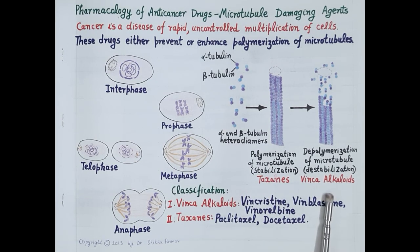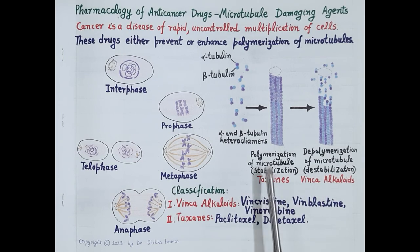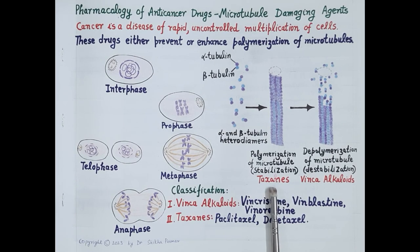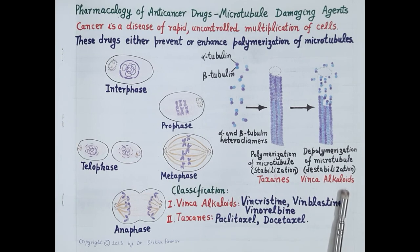Vinca alkaloids depolymerize microtubules, causing shortening of spindle fibers, and thus prevent lengthening. On the other hand, taxanes polymerize microtubules, causing lengthening of spindle fibers, and thus prevent shortening. Both lengthening and shortening of spindle fibers are essential for the process of mitosis. So these drugs stop the process of mitosis in a cell and kill the cell during the M phase.